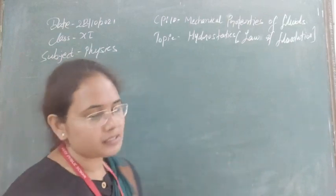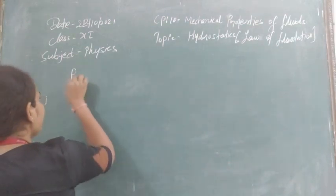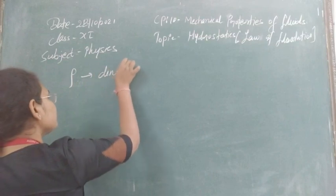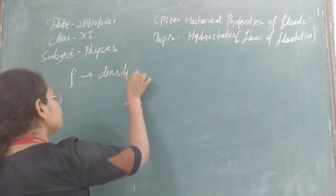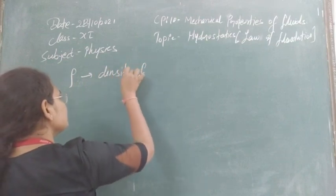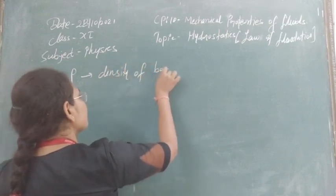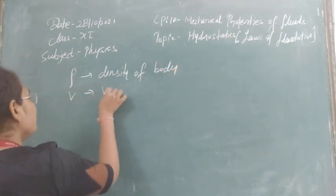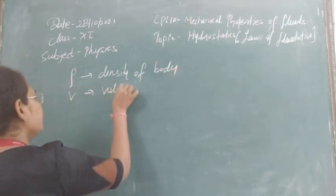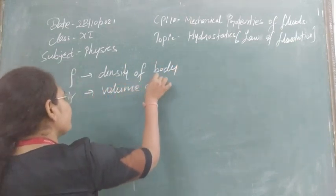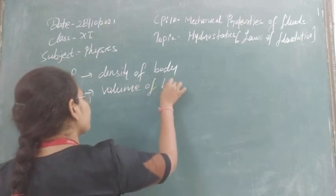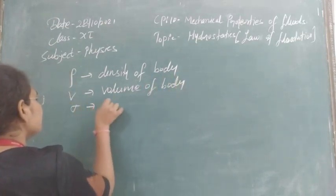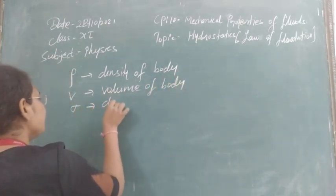Here, rho is the density of the body and sigma is the density of the liquid. These are the parameters defined for the system.